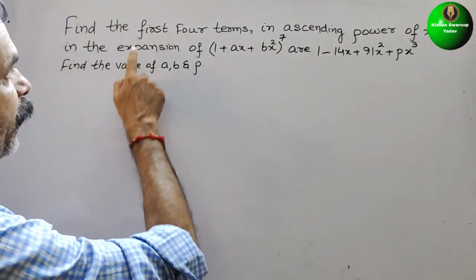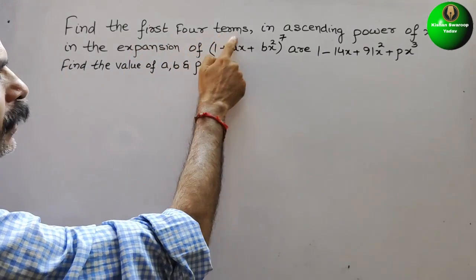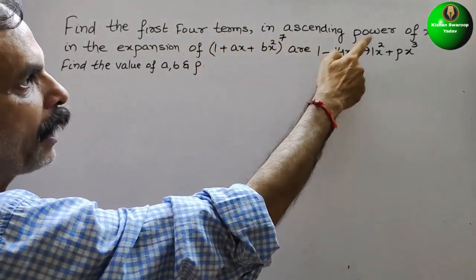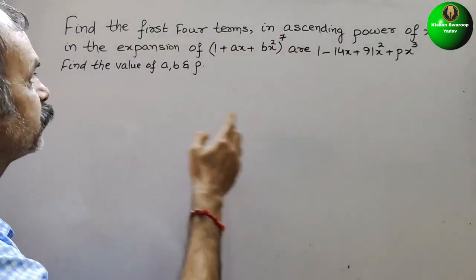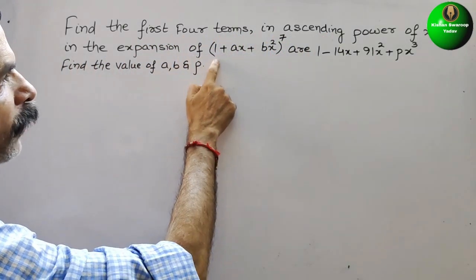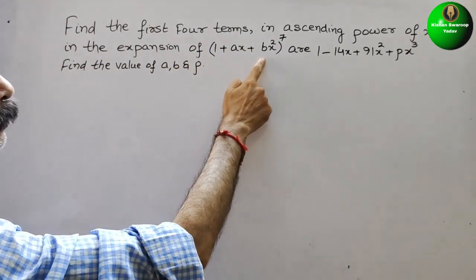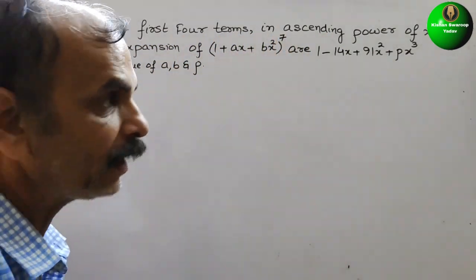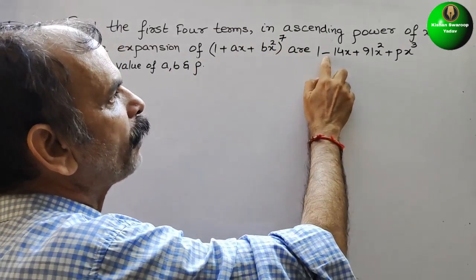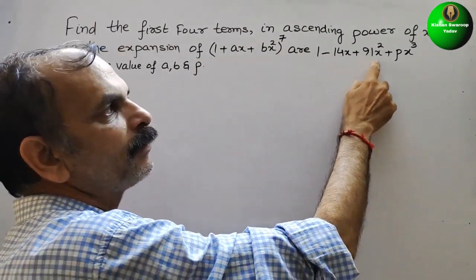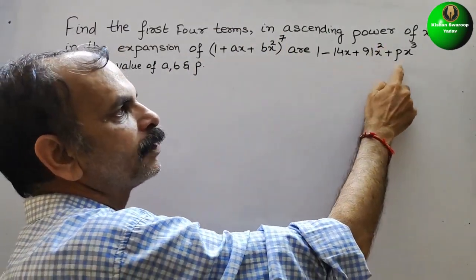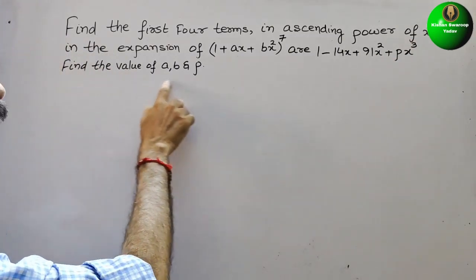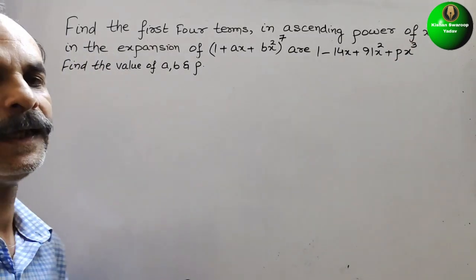Your question is: find the first four terms in ascending powers of x in the expansion of (1 + ax + bx²)⁷, which are 1 - 14x + 91x² + px³. Find the values of a, b, and p.